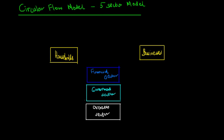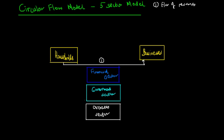The first flow was the flow of resources from households to businesses — flow one. Then we had flow two, representing the flow of incomes, with businesses buying the resources that households offered up to them.